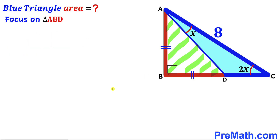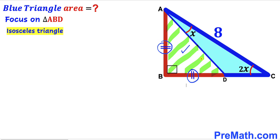In our first step, let's focus on triangle ABD. We can see this is an isosceles triangle since AB equals BD. Therefore we conclude that both base angles must be 45 degrees each.